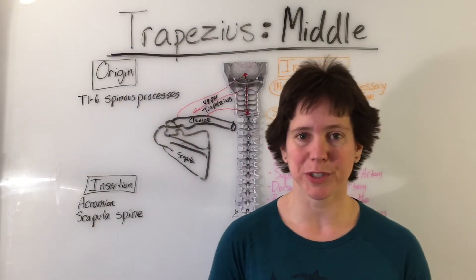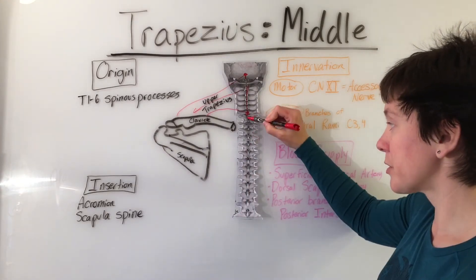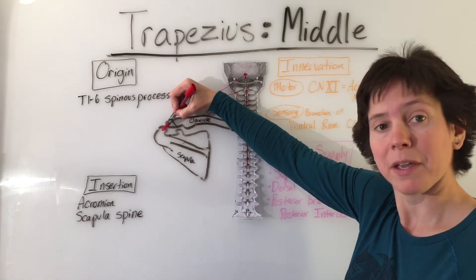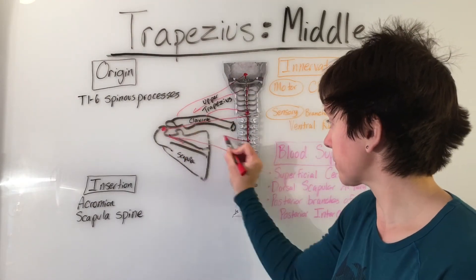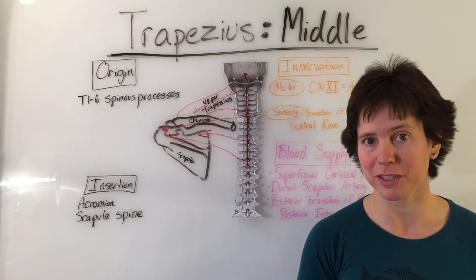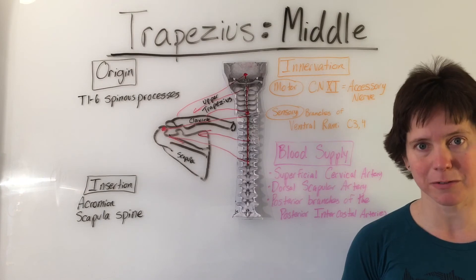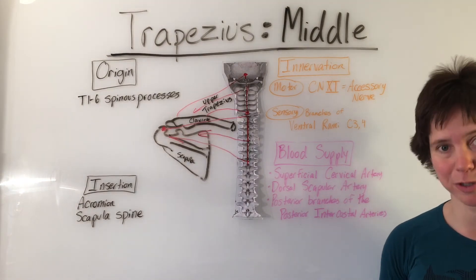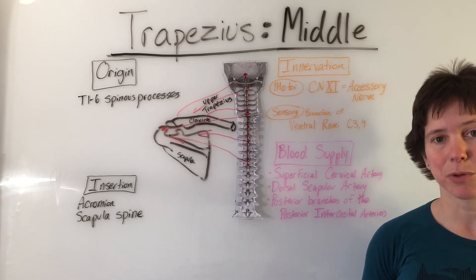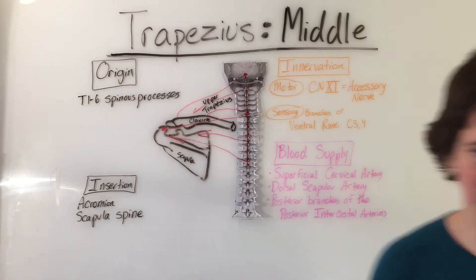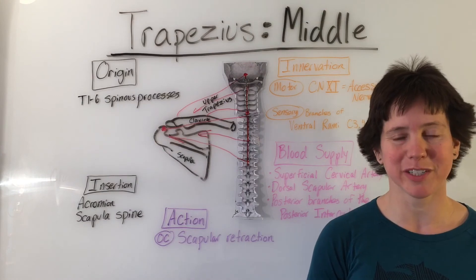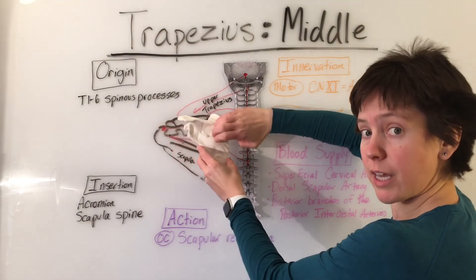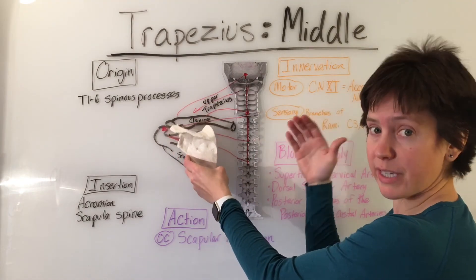The middle trapezius originates on the spinous processes of T1 through T7 — the upper half of the thoracic vertebral spinous processes — and inserts on the scapula at the acromion and the superior lip of the scapular spine. It has the same innervation as the upper trapezius: motor from cranial nerve 11, the accessory nerve, and sensory from branches of the ventral rami C3 and C4. The arterial supply is the same: the superficial cervical artery, the dorsal scapular artery, and the posterior branches of the posterior intercostal arteries. The action of the middle trapezius is scapular retraction — a medial slide and external rotation of the scapula.